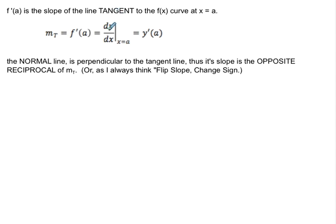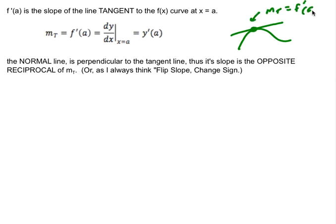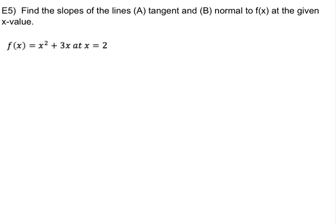If we evaluate the derivative f prime at a given point a — written as f prime of a, or dy/dx evaluated at a, or y prime of a — we get the slope of the line tangent to the curve at that point. The normal line is perpendicular to the tangent line, so it has the opposite reciprocal slope. In my head I always say: flip slope, change sign.